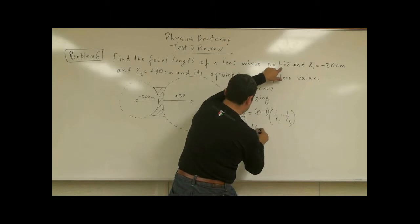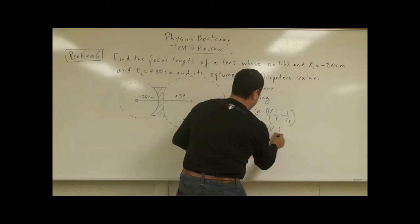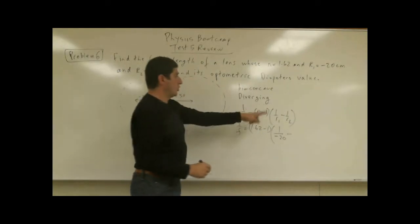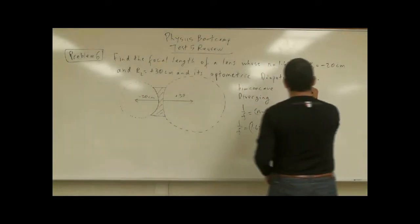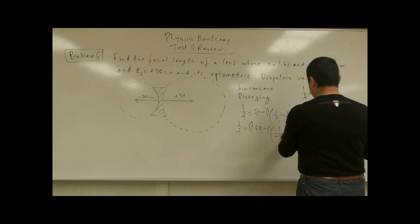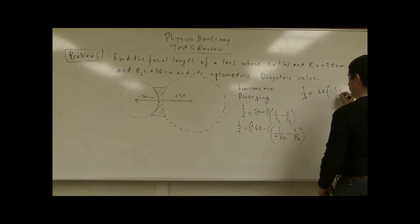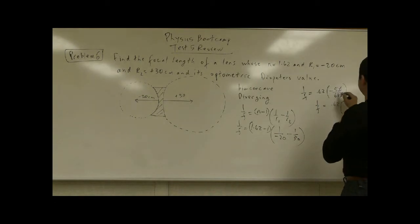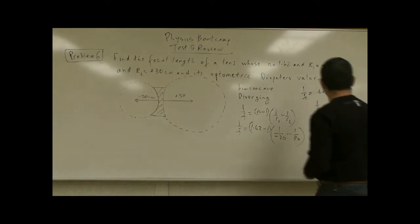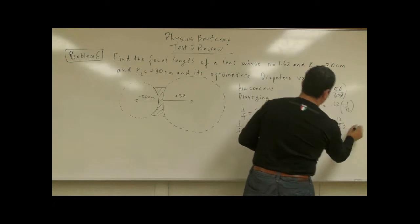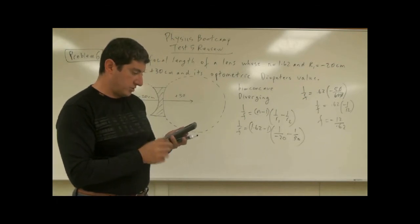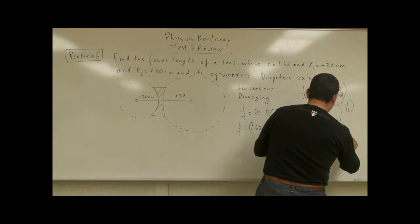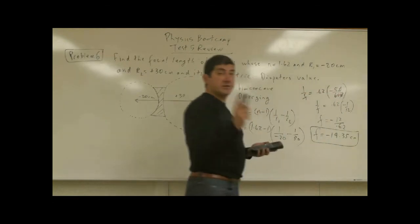The lensmaker's equation is: 1/f = (n − 1)(1/R1 − 1/R2), where we assume the background is air and n is the index of refraction of the material. Plugging in: n = 1.62, so (1.62 − 1) = 0.62; R1 = −20 cm, R2 = +30 cm. This gives 1/f = 0.62 × (−1/20 − 1/30) = 0.62 × (−50/600) = 0.62 × (−1/12). Therefore f = −12/0.62 ≈ −19.35 centimeters. This confirms it is a diverging lens.